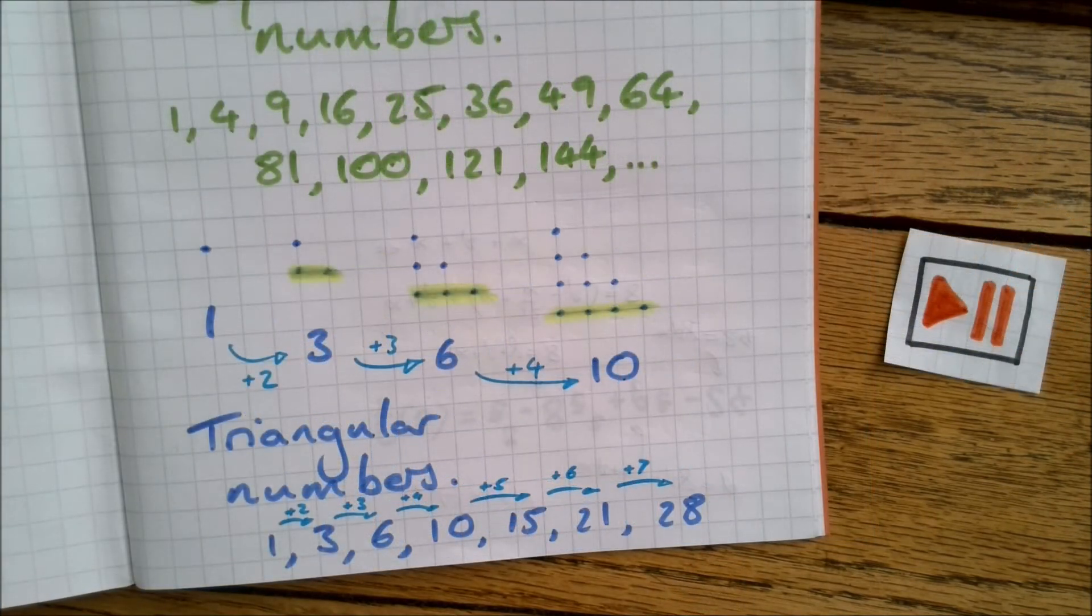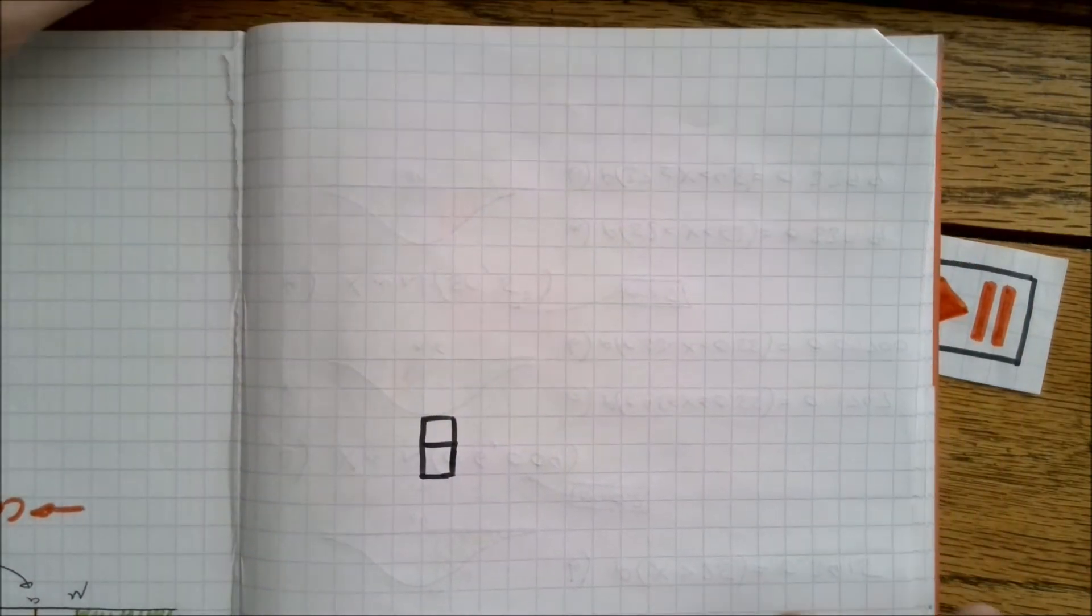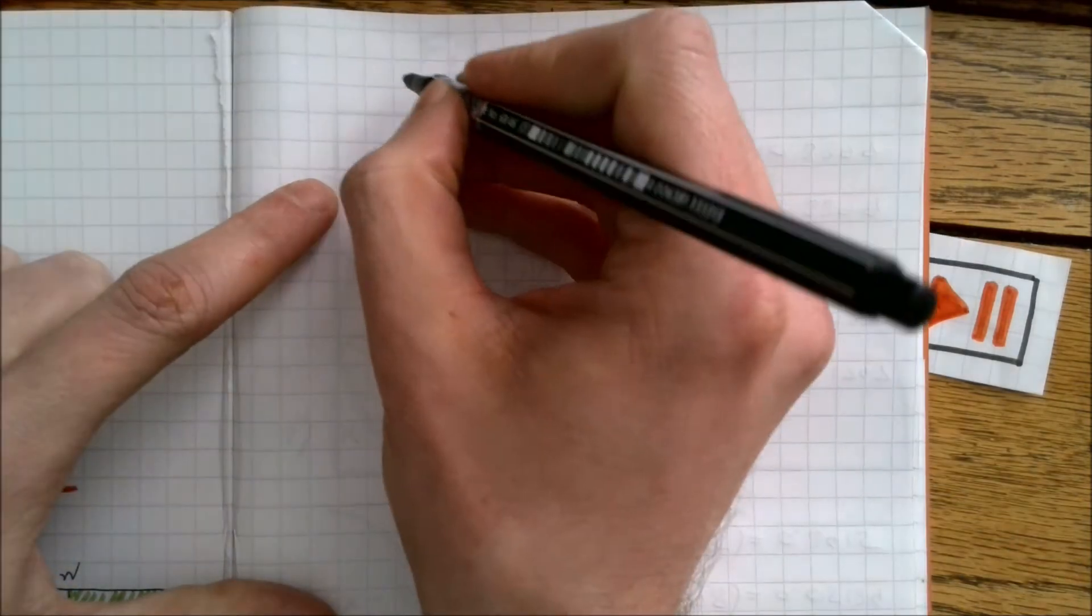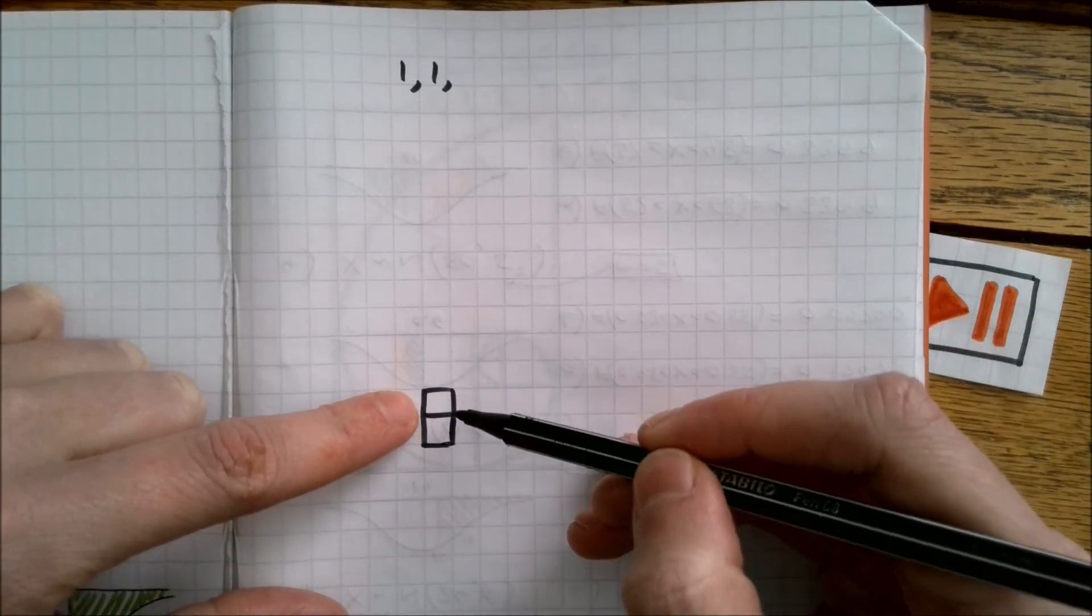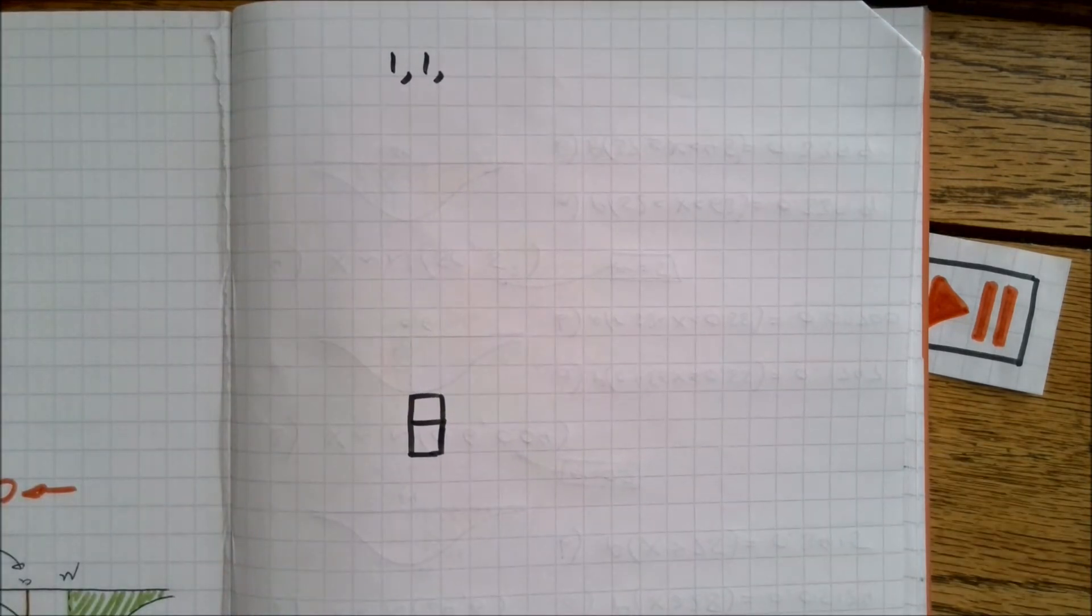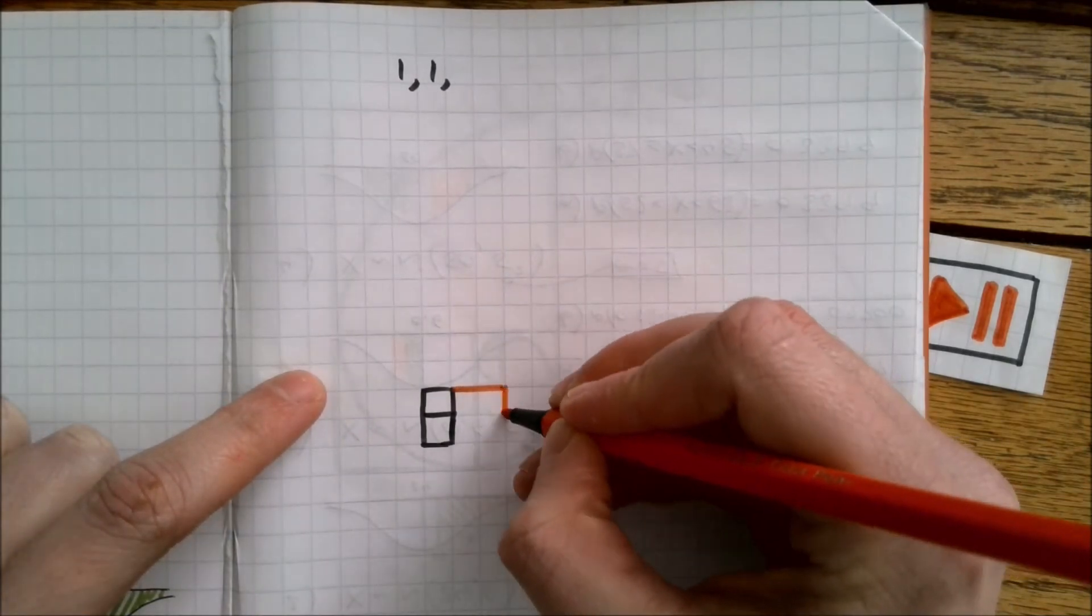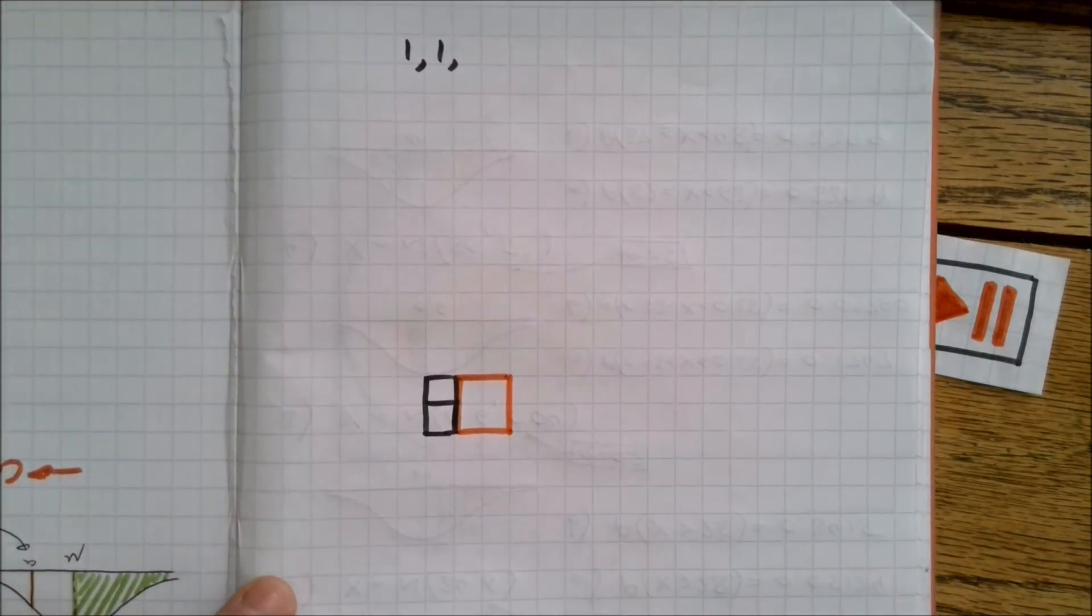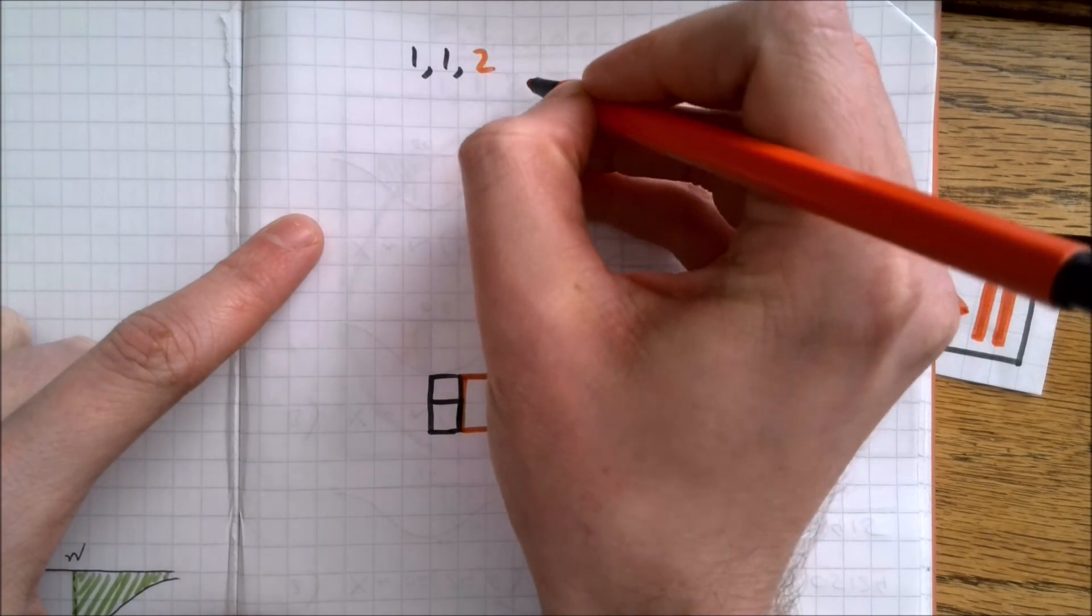Now there's just one more sequence that I want to talk to you about in this video. It's a little bit more complicated to draw, but I think it's really worth it because it gets to be really pretty once we've finished. It starts with the numbers 1, 1. And you can see here that I've drawn out little squares, 1 by 1 squares, two of them. On these squares, I'm going to draw another square that fits exactly by the side of the other two. And this square here has an edge length of 2. So the next number is 2.